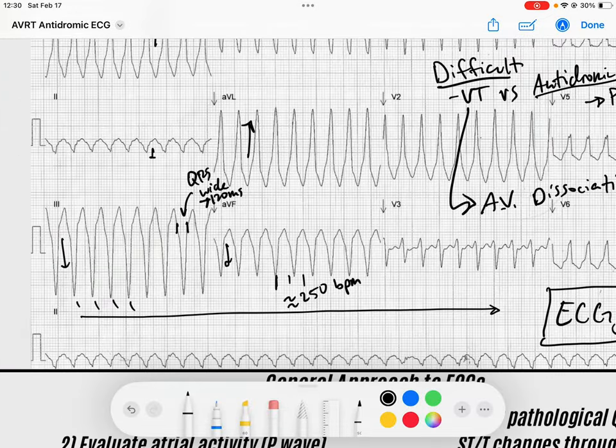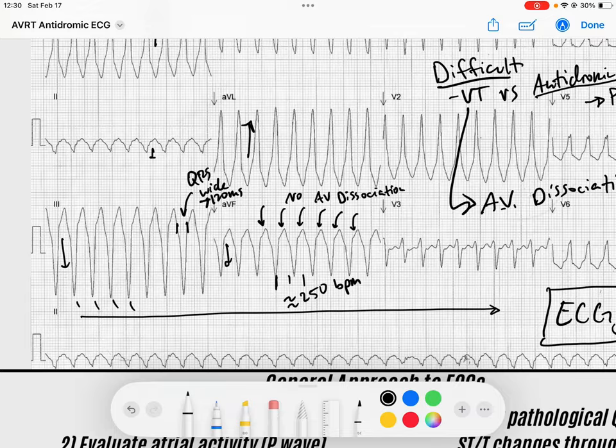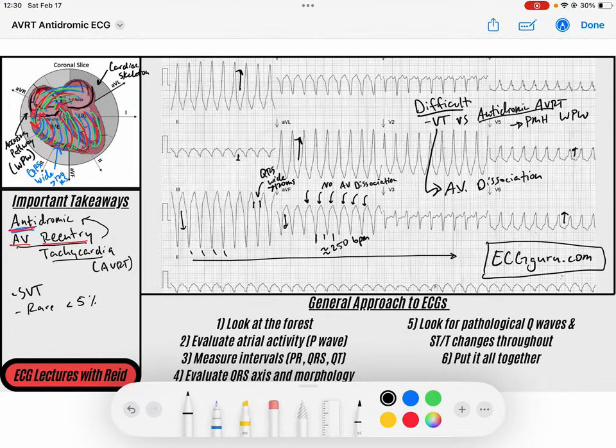But as I scan through, I look for AV dissociation. I look for P waves that are occurring on these ST segments. I'm looking for P waves that are occurring on the ST segments for AV dissociation. I don't see any. I see no AV dissociation. And so sometimes, like I said, these are really hard to discern. Sometimes you have to treat them like they are VT, and then later to find out that they are antidromic AV reentry tachycardia.